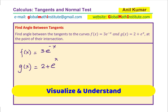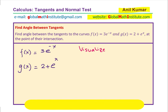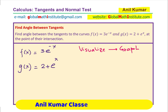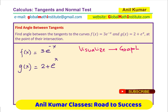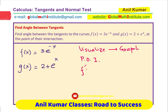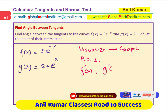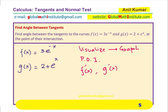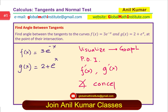So what should we do? First, we should visualize — that basically means we need to graph both f(x) and g(x). Then we have to find the point of intersection. Then we have to find the derivatives at the point of intersection, and then figure out the angle concepts. These concepts could be new for some students, so please carefully understand the video.